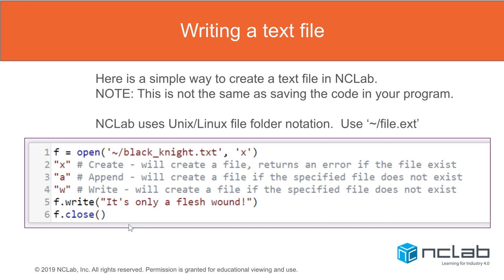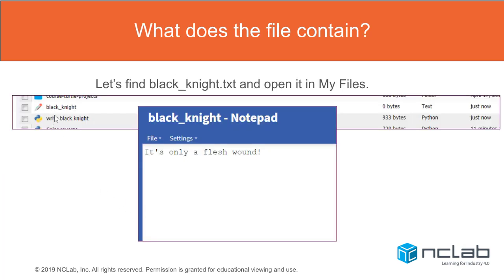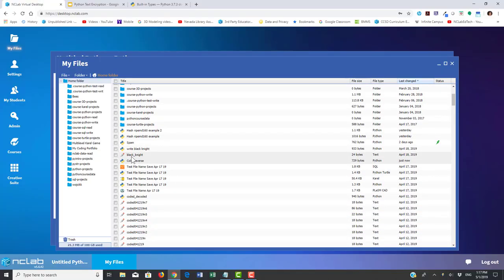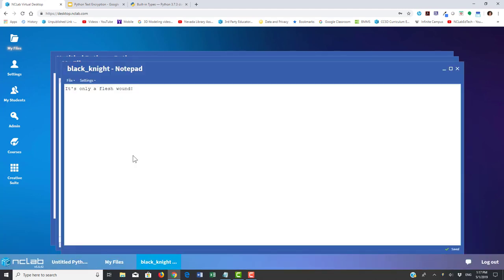Let's see what happens. If we go to My Files, we'll find a file called Black Knight — we know we created it and it has the .txt extension. If we open it, it'll open in Notepad, which is a text file reader and writer. And there it is: 'It's only a flesh wound.' Let me try that for real — there's the file I created. I'll click on that and it's opened in Notepad. 'It's only a flesh wound.'